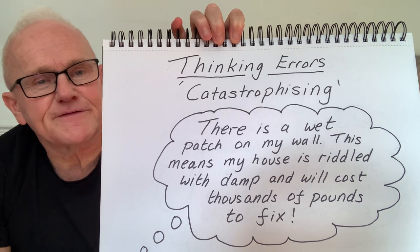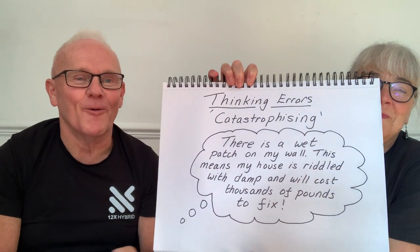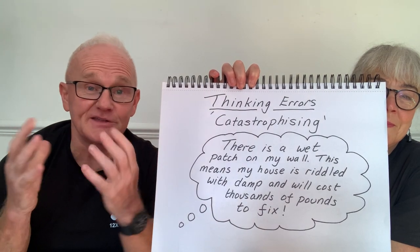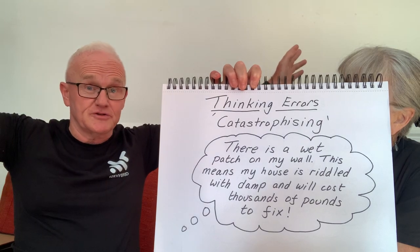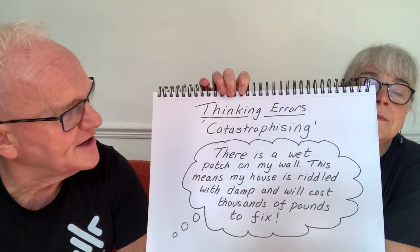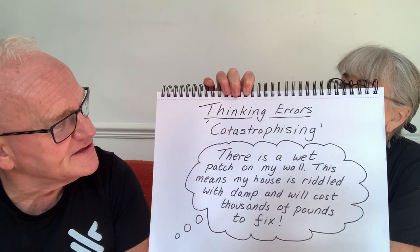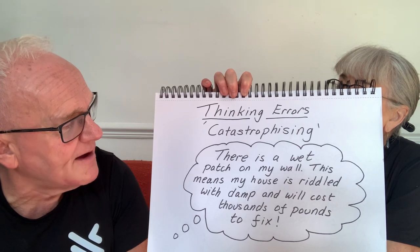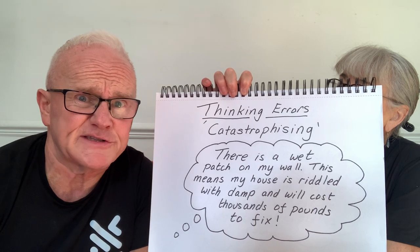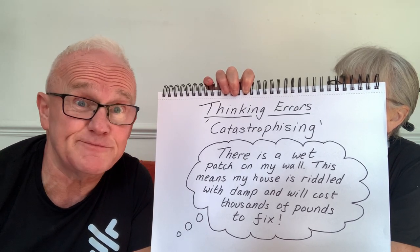The first one, which some of you may have come across before, is called catastrophizing. Catastrophizing is when we take something that is comparatively small and blow it out of all proportion — make it far bigger than it actually is. In this example, there's a wet patch on the wall. If I was catastrophizing, I might say: 'Oh my goodness, this means my house is riddled with damp, it's going to cost thousands of pounds to fix, and that means I can't take the family on holiday — they'll all hate me.'